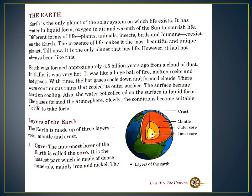All of you follow the book. Earth is the only planet of the solar system on which life exists. It has water in liquid form, oxygen in air, and warmth of the sun to nourish life. Different forms of life — plants, animals, insects, birds, humans — all of them coexist on the Earth. The presence of life makes it the most beautiful and unique planet.